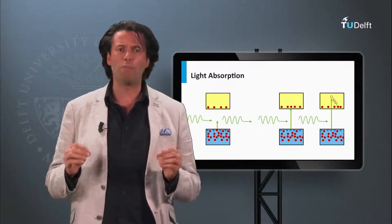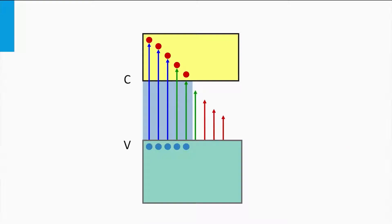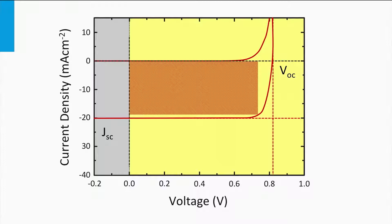Let's see how the band gap affects the open circuit voltage and short circuit current density. In this illustration, the conduction band, valence band, and band gap of the absorber material are shown. I represent the solar spectrum by arrows with various lengths and colors. The blue arrows correspond to energetic photons whose energy is much higher than the band gap. The green and red arrows correspond to photons with lower energy. The red photons have energy even smaller than the band gap energy. Note that in this illustration the band gap is relatively large. Only the blue and partly the green photons are able to excite charge carriers. On the JV curve, this is indicated by a relatively low short circuit current density, while due to the large band gap, a higher open circuit voltage can be obtained.